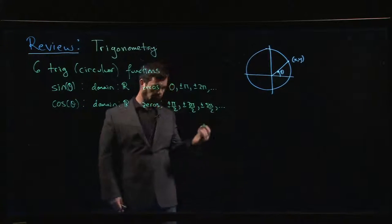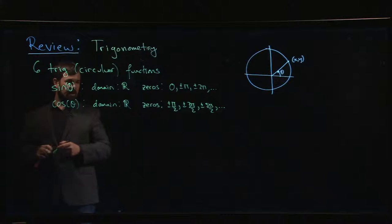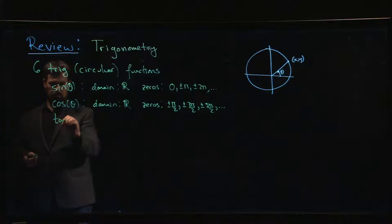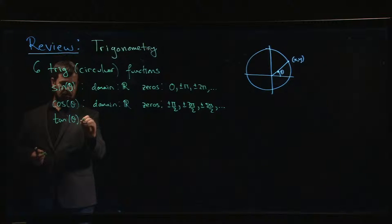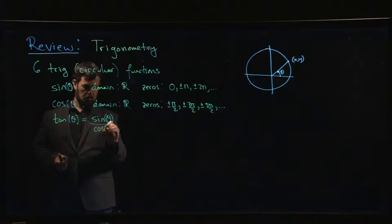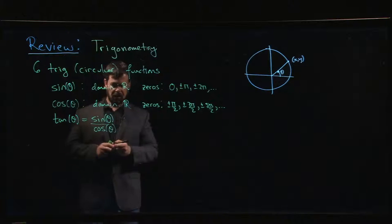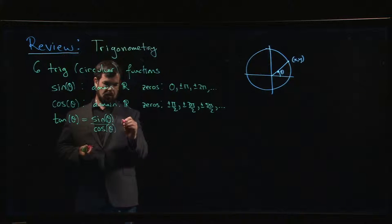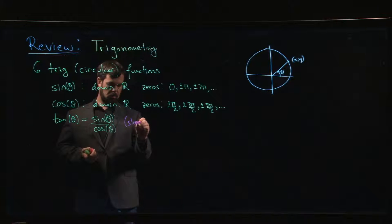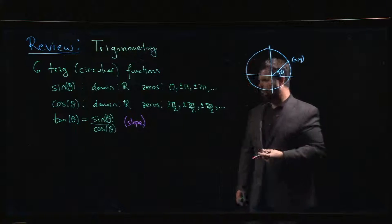Now we get to tangent. Tan theta is defined as sine theta over cosine theta. One way to think about it is that it's really slope — it's the slope of the line segment on the unit circle, because it's y over x, rise over run. So tangent is sort of measuring the slope.